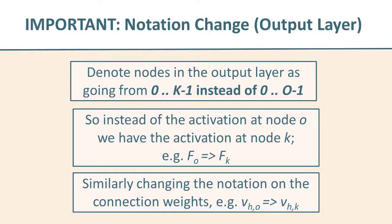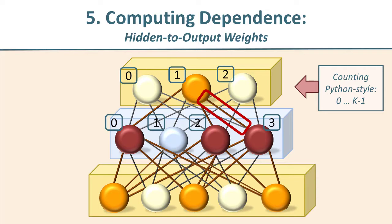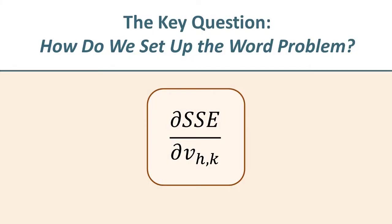Let me take a quick sidebar here. I'm introducing a notation change, and this is just for the nodes in the output layer. Instead of denoting them as running from zero up through O minus one, where O stands for the total number of nodes in the output, we're going to run them from zero up through K minus one. That's just because when the typeset gets small, sometimes it's easy to confuse an O with a zero. So we're just switching to K instead. So let's move on.